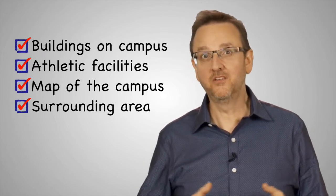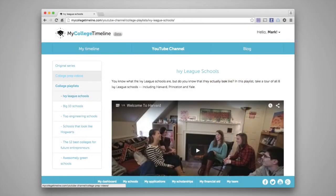Another great thing you can do is right here on My College Timeline. Just click on the button above that says YouTube Channel. Then click on the button that says College Playlists. Here you'll find hundreds of YouTube videos about various colleges, organized into different playlists.